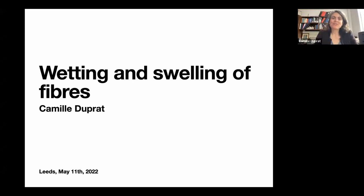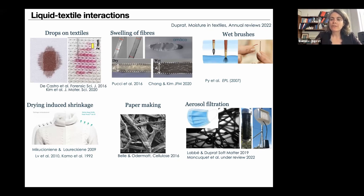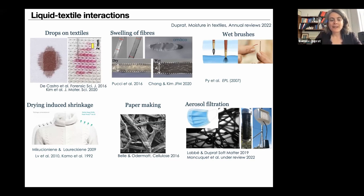Today I want to talk about textiles. There are many very interesting topics in textiles — fluid mechanics and soft matter questions which are relevant to textiles. I will give a quick overview of these questions. I just published an annual review on the topic at the beginning of this year. It starts with very simple questions which are actually less simple than they seem — for example, how a drop spreads on a textile is a very complex multiscale system.